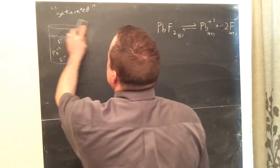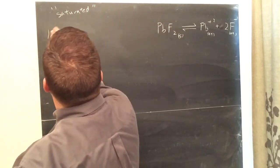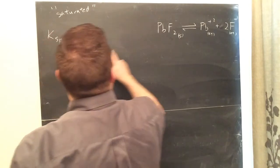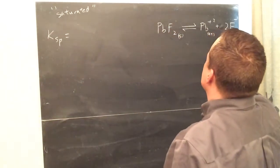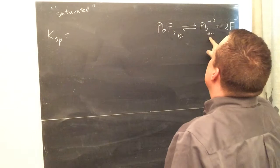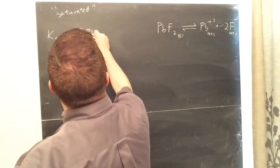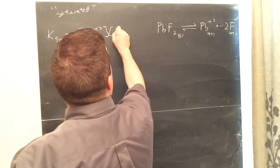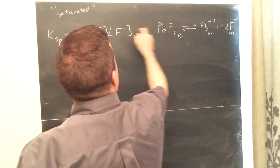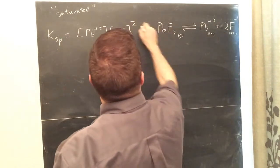Okay, so the next part of this question says, write the K expression for this. All right, the KSP equals, now the K, remember, is products over reactants. But now, that's a solid aqueous, aqueous. You only are going to put the aqueous things, so Pb plus 2, F negative. And don't forget, that'll be squared, because there's a 2 here.